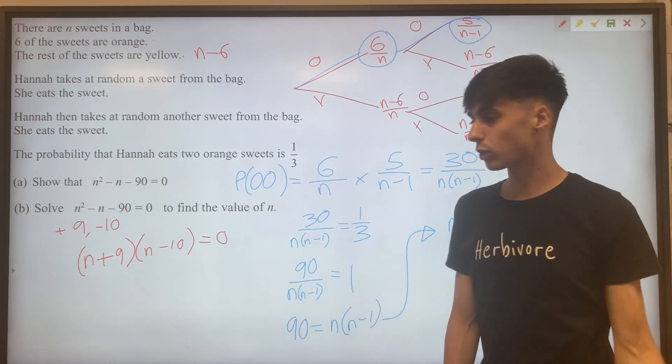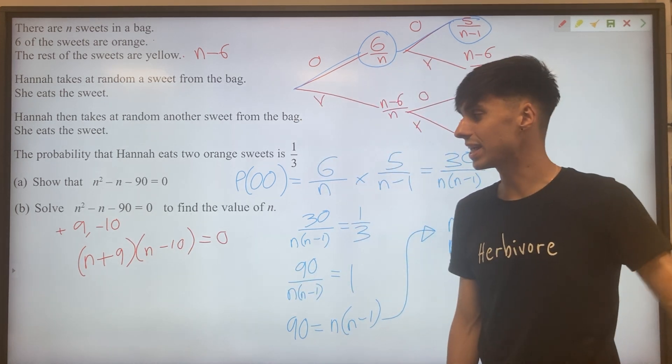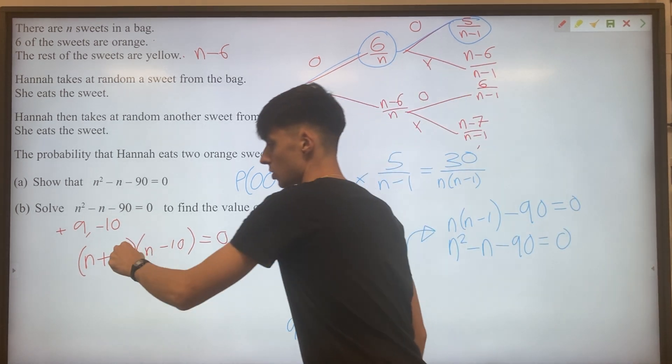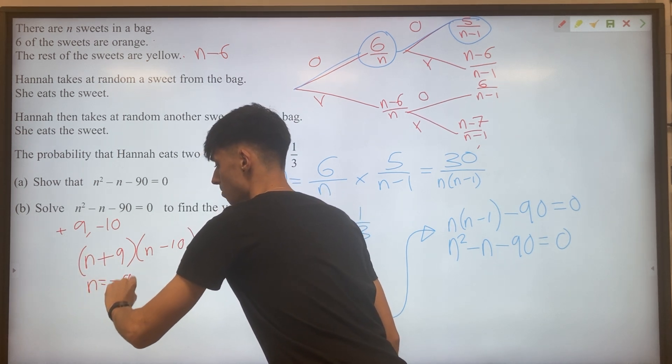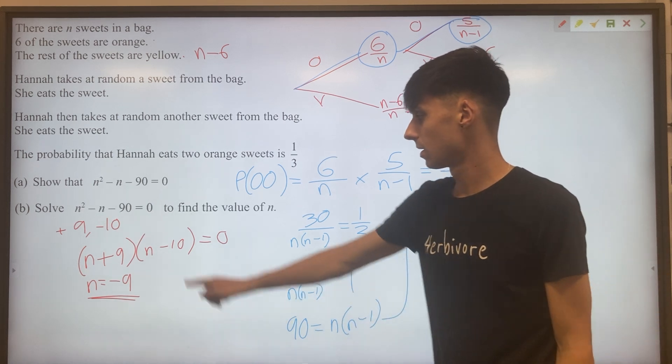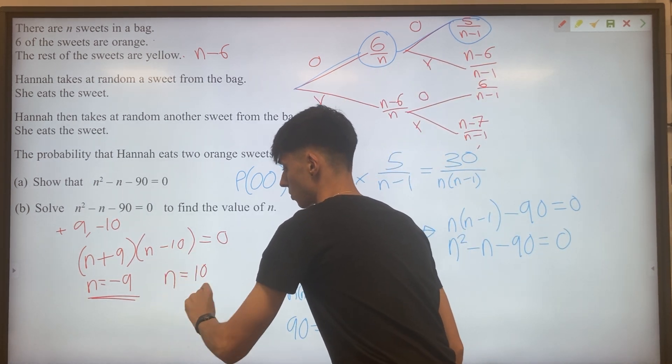And if you think about solving quadratics, we need to make each of those brackets individually equal to zero. So if N plus nine equals zero, that would mean N equals minus nine. We take the opposite sign. And if N minus 10 equals zero, that means N equals 10.